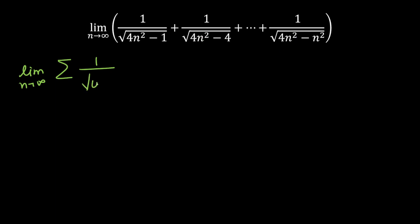We will get this as root over 4n². As you can see, 4n² is common everywhere, and minus times something we need to generalize. For the first term it is 1, for the second term it is 4, and for the n-th term it is n². That means for the r-th term it will be r². So r is varying from 1 to n — first term is 1 and for the n-th term it is n².